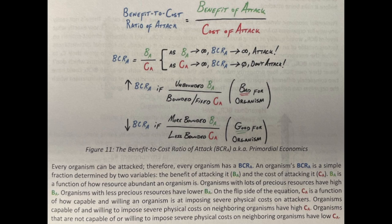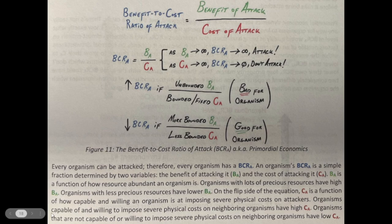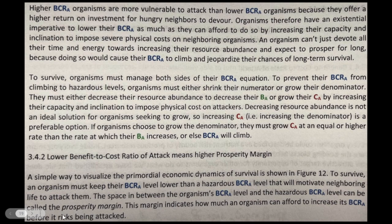BA is a function of how resource-abundant an organism is. Organisms with lots of precious resources have high BA; organisms with fewer precious resources have lower BA. On the flip side of the equation, CA is a function of how capable and willing an organism is at imposing severe physical costs on attackers. Organisms capable of and willing to impose severe physical costs have high CA; organisms that are not capable or willing have low CA. Higher BCRA organisms are more vulnerable to attack than lower BCRA organisms, because they offer a higher return on investment for hungry neighbors to devour.